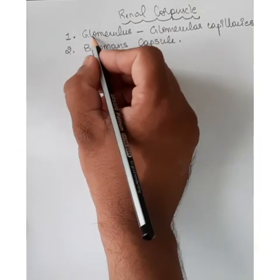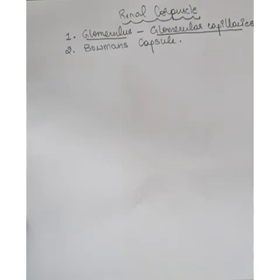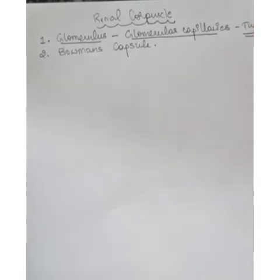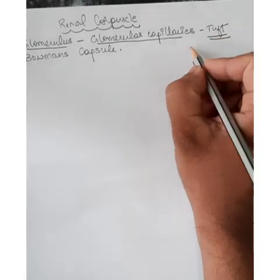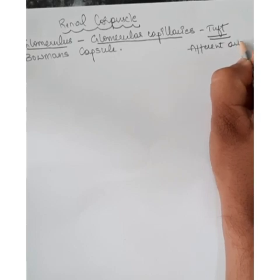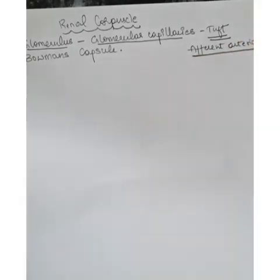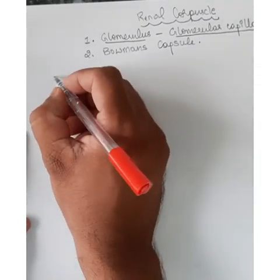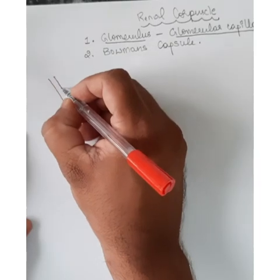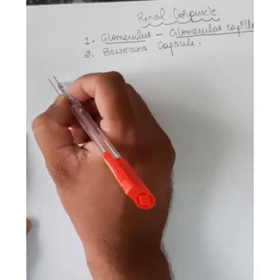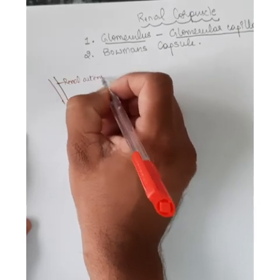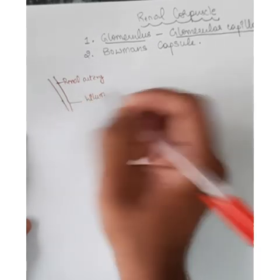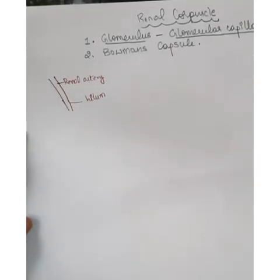The glomerulus or glomerular capillaries is a tuft of capillaries that emerges from afferent arterioles. The renal artery enters inside the kidney through the hilum, and it is then divided into different branches like interlobar arteries and segmental arteries, and later it leads to what are called afferent arterioles.